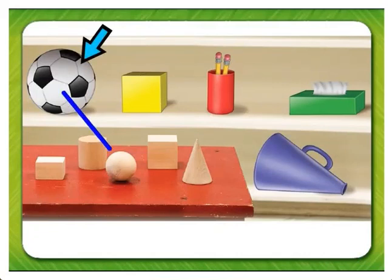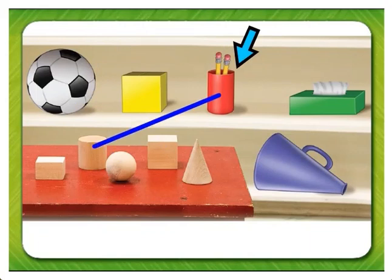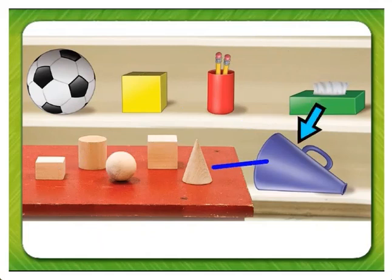The soccer ball is the same shape as this sphere. The box is the same shape as this cube. The pencil holder is the same shape as this cylinder. The box of tissues is the same shape as this rectangular prism. The megaphone is the same shape as this cone.